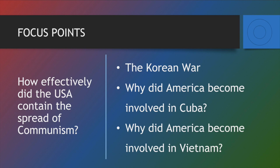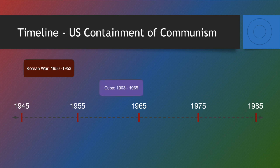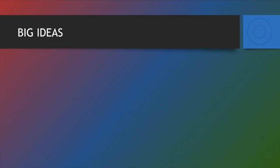As we get into the content, there are three focus points for this particular unit. The first is the Korean War, the second is why did America become involved in Cuba, and then finally why did America become involved in Vietnam. Let's take a minute to look at a timeline so we understand where the three focus points fall. Korea happens shortly after the end of the Second World War, Cuba happens in the mid-60s, and Vietnam is perhaps the longest period — starting in the 60s and extending through the mid-70s.